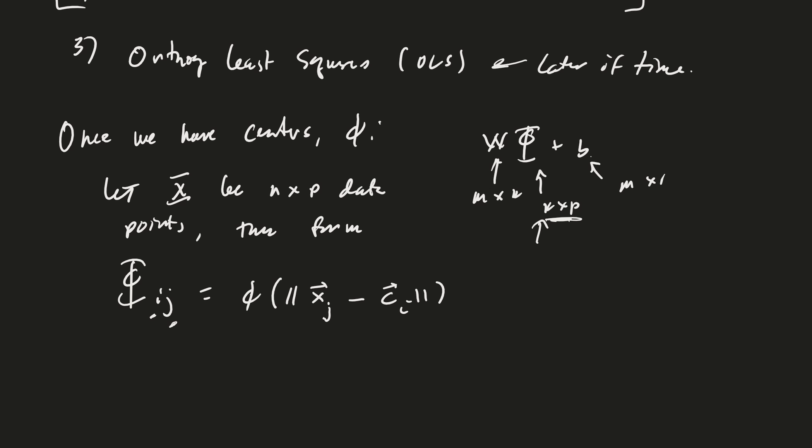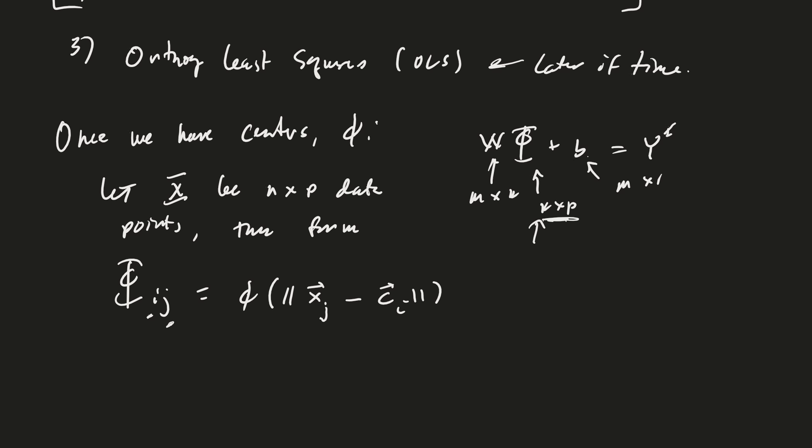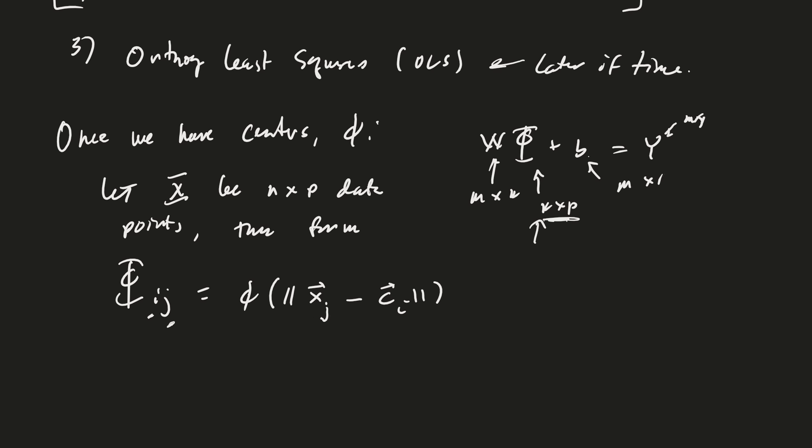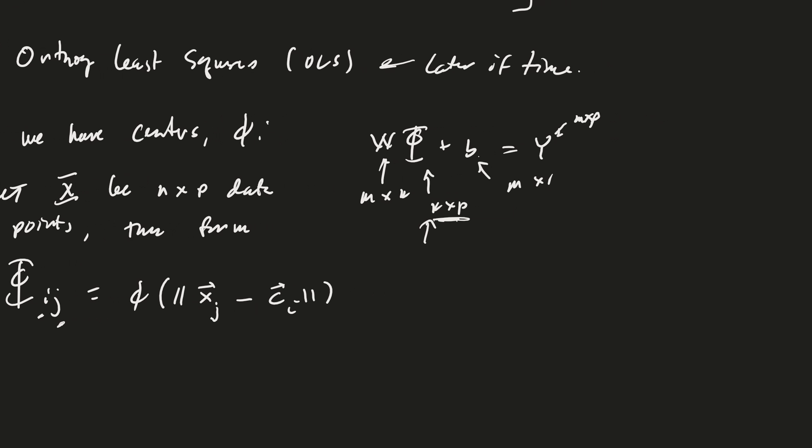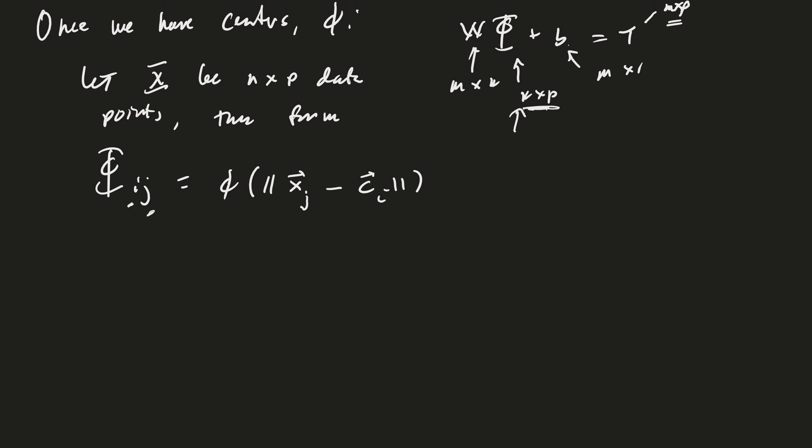And so this is going to be running through all your data points and all your centers. Excellent. So we're going to end up with this matrix, and this is going to be equal to y, which is what size? m by p. This is going to be the targets T, I should say.